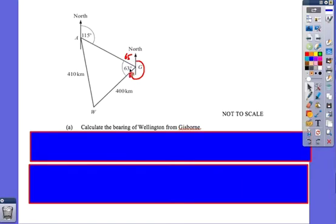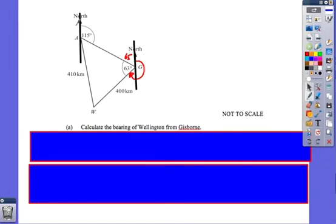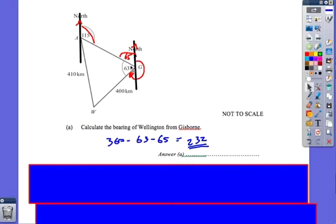Well, this bearing here is going to be 360 take away the angle inside. We know that this angle here is 63. How did we work out that this angle here is 65? Well, this comes up quite a lot. We basically have the north arrow here and then the north arrow here. Those two north arrows are going to be parallel. From parallel lines, you should know that the two lines inside the parallel lines together will add up to 180. So if this is 115, this must be 65. Therefore, the bearing that we want is going to be 360 take away that 63, take away that 65, which is 232.